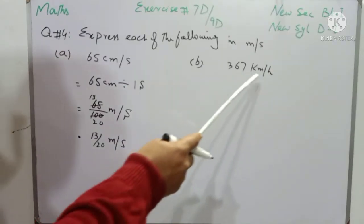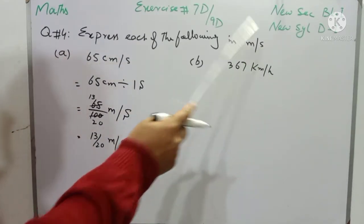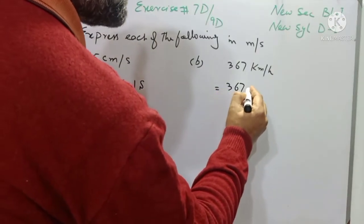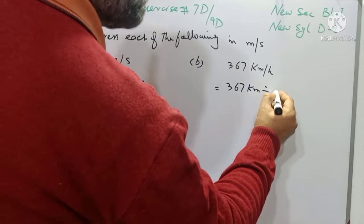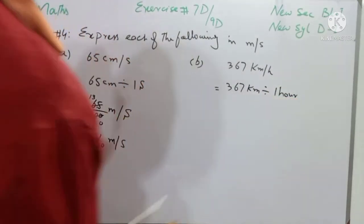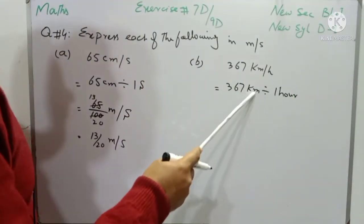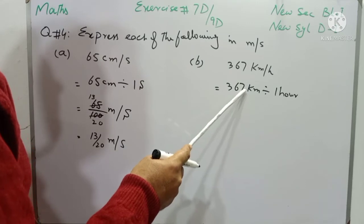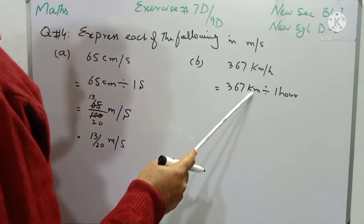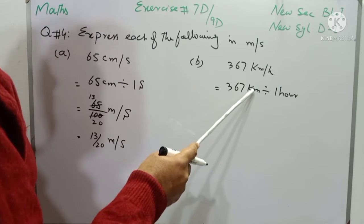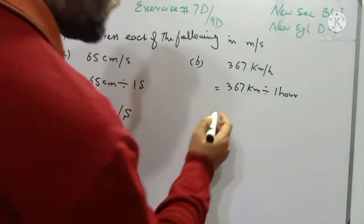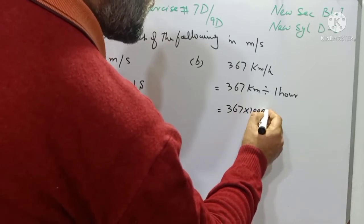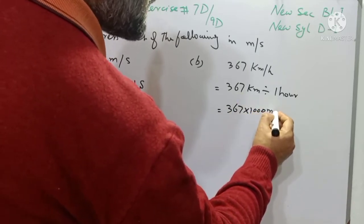Now we have to convert 367 kilometer per hour into meter per second. It is written as 367 kilometer divided by 1 hour. The hour will be converted into seconds and the kilometer will be converted into meters. You know that there are 1000 meters to make 1 kilometer — in 1 kilometer there are 1000 meters — so we write it as 367 multiplied by 1000. Now kilometers are converted into meters.